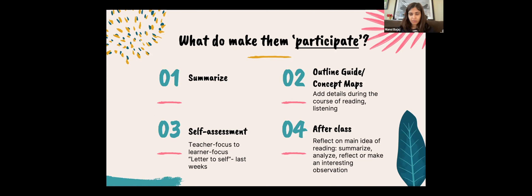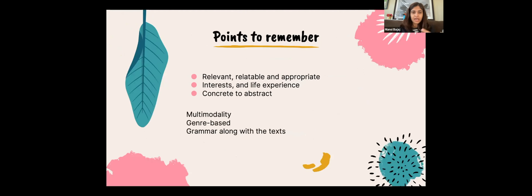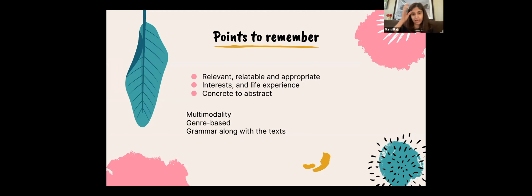You could ask students to draw outline guides or concept maps, or instead of a teacher-focused approach, have them write a letter at the beginning of a lesson and then reflect on what they've learned afterward. A few key points: the book should be relevant, relatable, and appropriate to the students depending on their background. Therefore there is a very dire need for a separate book for heritage language learners, based on their interests and life experiences — which may be wide, but are certainly very different from those of a foreign language learner. With that, I'll conclude the presentation. Thank you so much.